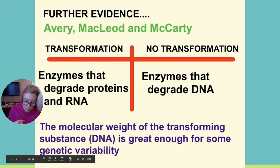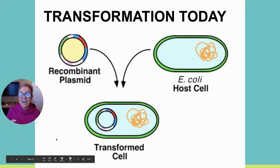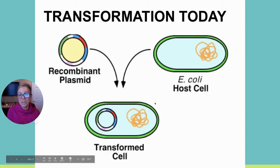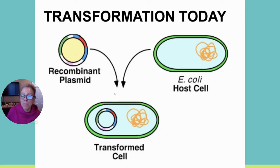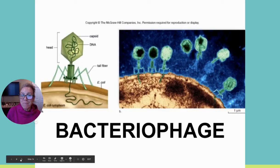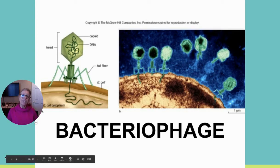The original mouse experiment was in the 1920s, Avery MacLeod and McCarty was in the 1940s, and now we move to the 1950s. Today when we talk about transformation we can transform living organisms — if we're back on campus we will do exactly this, forming recombinant plasmids and transforming E. coli to express eukaryotic traits.